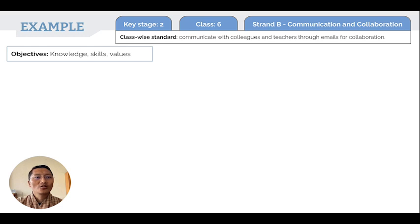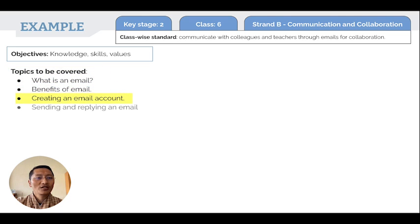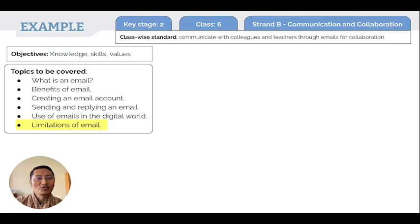After listing the objectives, the next step is to identify the topics to be covered. The topics listed are: what is an email, benefits of email, creating an email account, sending and replying to an email, use of emails in the digital world, and limitations of email.